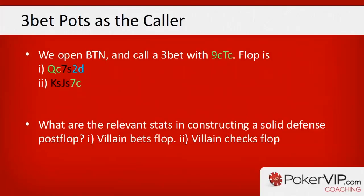On the turn with nine-ten of clubs, we look to hit one of our better cards. We have backdoor flush outs with clubs, a jack or eight gives us an open-ender, and various gut-shot cards like a king or a six. Generally we think about continuing on the turn if we improve to one of these outs, whereas facing a second barrel unimproved we should generally fold — but we want to base this on our opponent's stats.